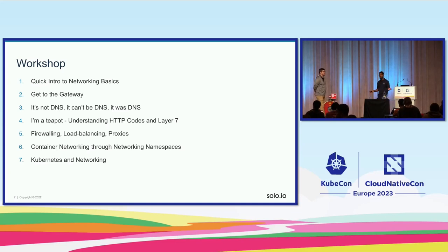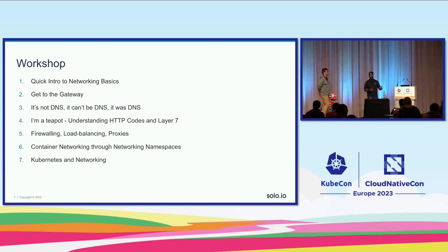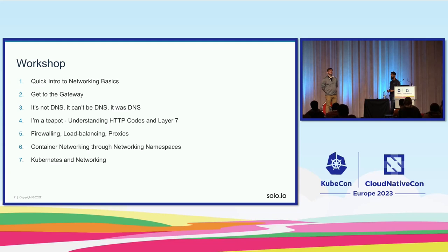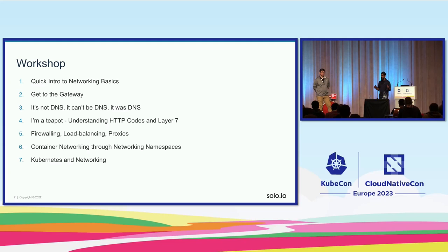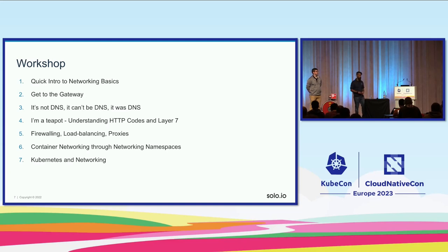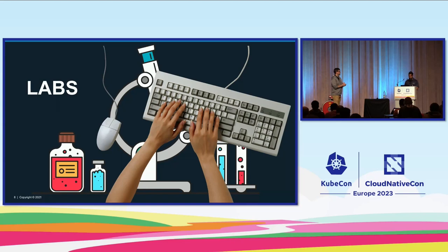I'll cover why we need DNS and why it's important, because you obviously don't want to remember everyone's IP addresses. Then I'll cover the HTTP layer because it's important and transitions us to where we interact with applications via APIs. I'll pass it to Jason who'll cover core network components that process traffic, implement policy, and allow easy navigation. Then I'll cover container networking as a foundation for Kubernetes networking, and Jason will wrap up with Kubernetes networking objects and resources.